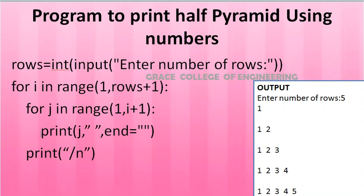By default, the print statement will produce a new line. To get only a space between values, we use end equal to double quotes with a space. Then a print with a newline character creates a new line after each row.